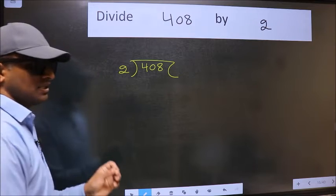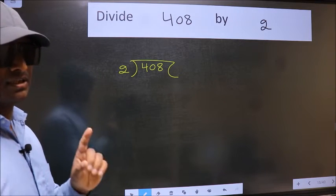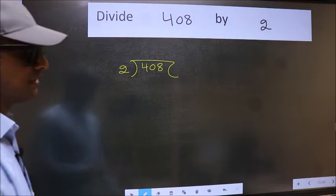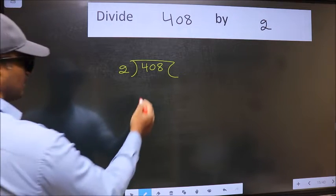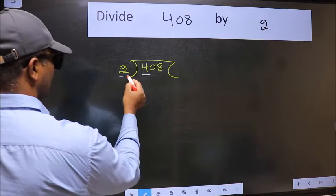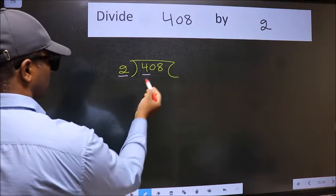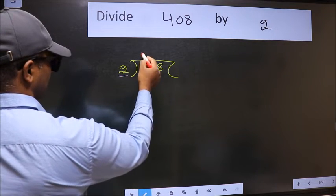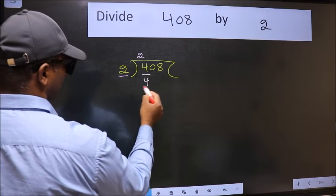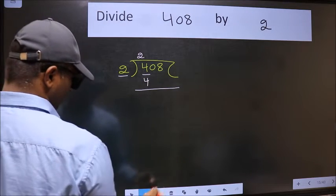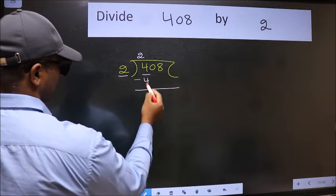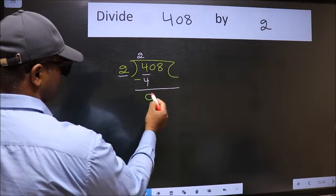This is your step 1. Here we have 4 and here 2. When do we get 4 in 2 table? 2 2's 4. Now we should subtract. We get 0.